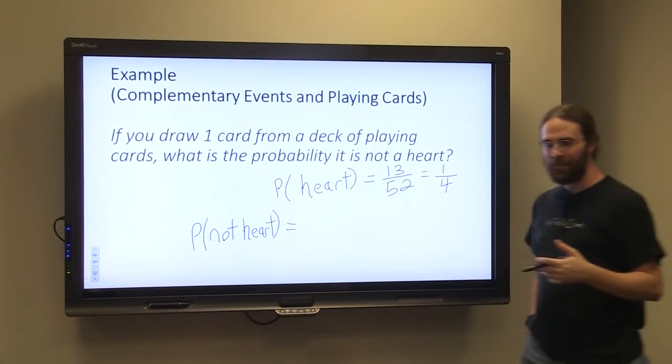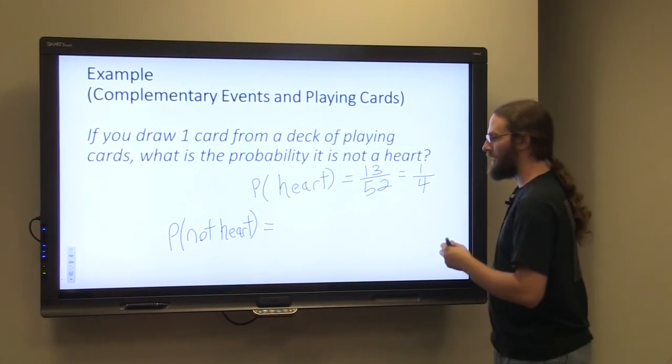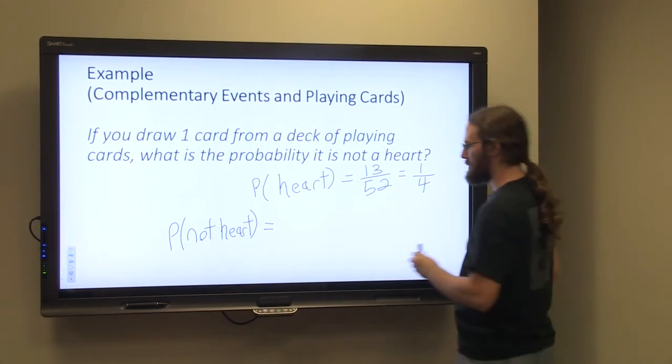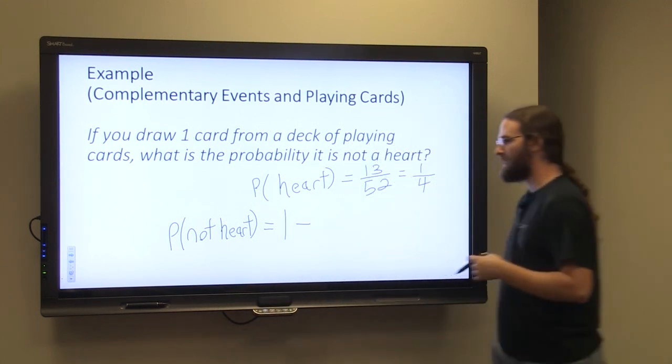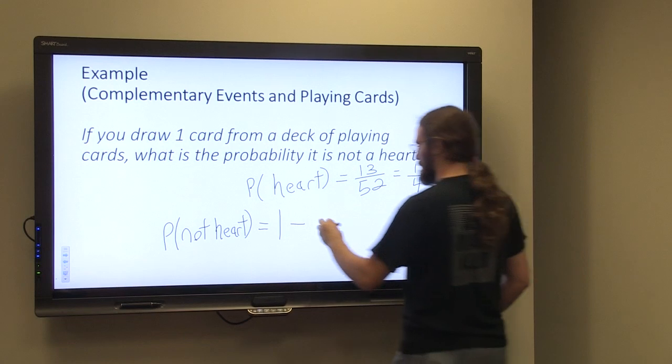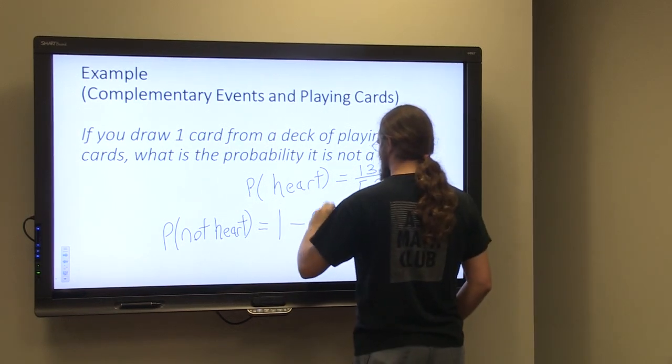So the complement rule, we look at the opposite. We know the sum of all possible probabilities will be one. So we're going to do one minus the opposite, the complement of not drawing a heart, which would be drawing a heart.